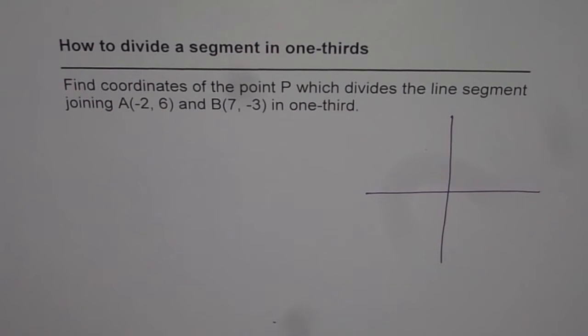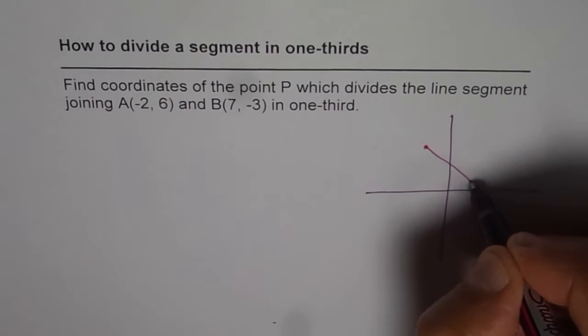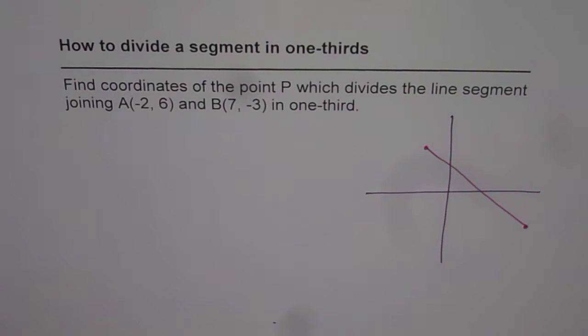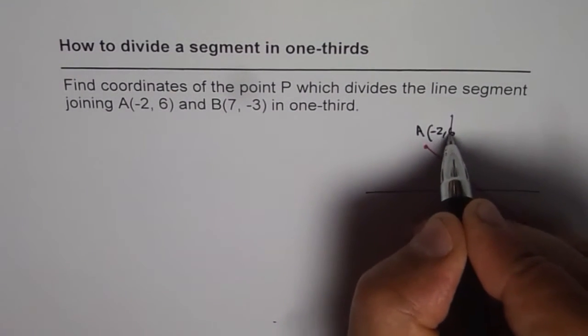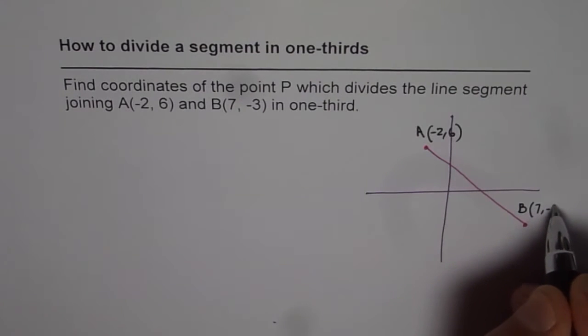So basically what we have here is a line segment which joins these two points. That is what we have, where point A is (-2, 6) and point B is (7, -3).